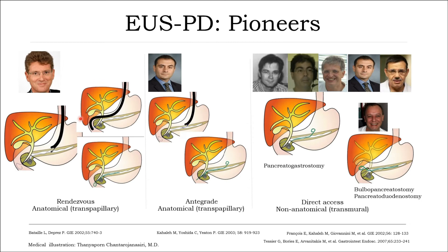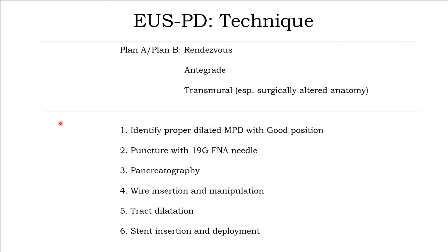Regarding technical aspects of EUS-PD, we thank all pioneers who created this procedure. The EUS-PD family includes the antegrade approach combined with pancreaticogastrostomy or pancreaticoduodenostomy, the so-called rendezvous pancreaticostomy, antegrade stenting, and antegrade wire manipulation for the long rendezvous. There are 6 technical steps for EUS-PD.